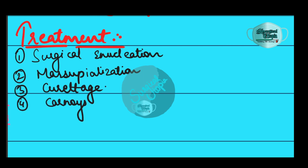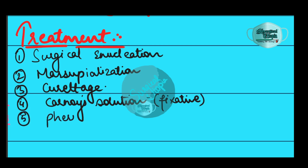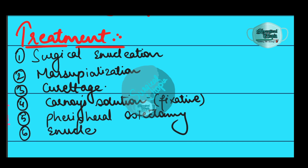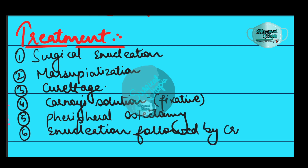The fourth treatment option is the use of Carnoy's solution along with enucleation, in which ethanol, chloroform, and acetic acid are the main components. It is used along with excision and curettage. The cavity wall can be treated with this fixative either before enucleation to kill the lining, or after curettage to the bony walls, killing any residual epithelial cells to a depth of 1–2 mm.